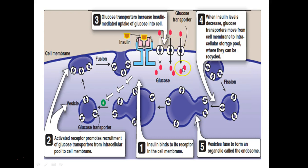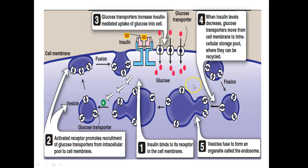These are the glucose molecules that are taken in. After some time, when insulin levels decrease, the glucose transporters get internalized, forming vesicles that fuse with endosomes and stay back in the cell. When the need arises and insulin binds to the receptor again, GLUT molecules are recruited to move to the membrane by fusion, making these transporter molecules at the membrane to move glucose into the cell, and then they get internalized again.